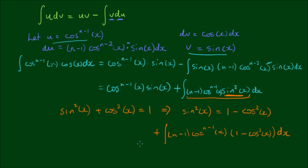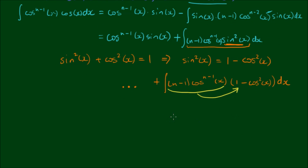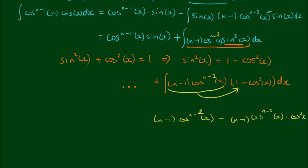Expanding n-1 times cosine to the n-2 into the parentheses, the integrand becomes n-1 times cosine to the n-2 minus n-1 times cosine to the n-2 times cosine squared x. Note: there was a correction — the power should be n-2 throughout. The second term simplifies by adding indices to become cosine to the n of x, while the first term remains n-1 times cosine to the n-2 of x.